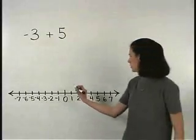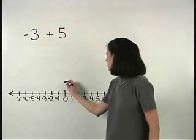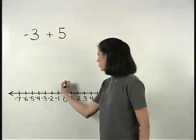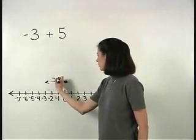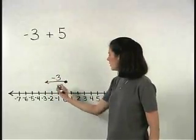So starting at 0, negative 3 moves us 3 units to the left. Then from there,